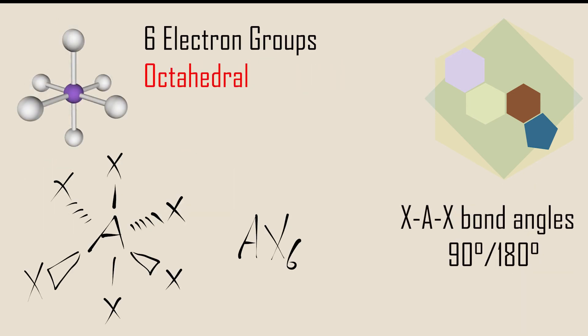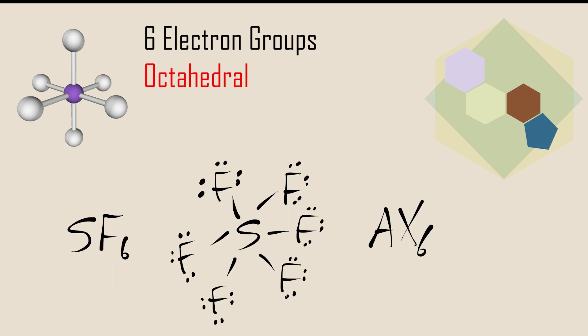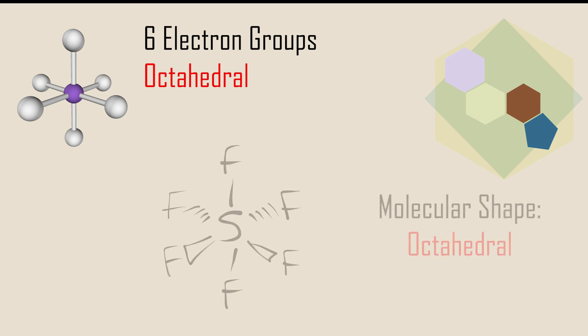For molecules with central atoms attached to six electron groups, the electron group geometry is octahedral. Sulfur hexafluoride is an example of a molecule with an AX6 designation and therefore an octahedral geometry.